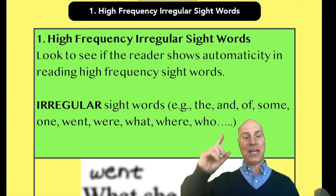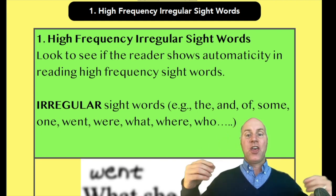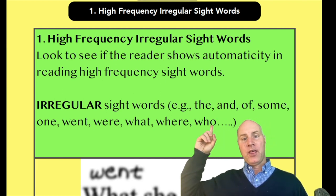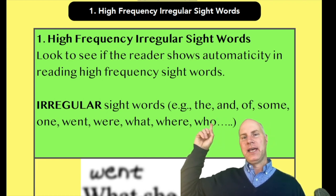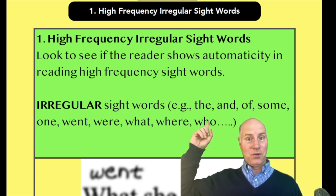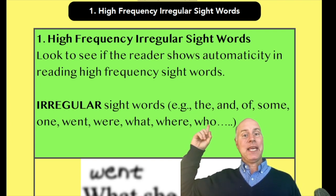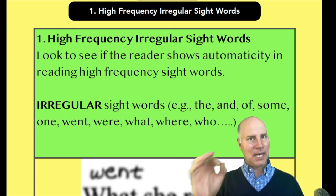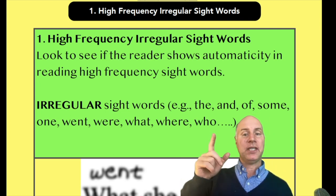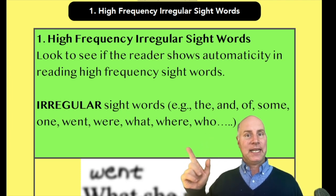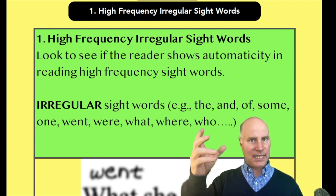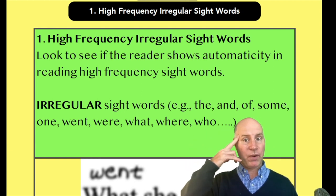Irregular sight words are words like 'the,' 'and,' 'of,' 'some.' Think about the word 'the' — do you hear an A sound? It should be 'thay' by phonics rules, but it's 'the.' That's irregular. You'd have to teach the student that T-H-E doesn't say 'thay,' it says 'the.' They'd have to memorize that irregular word.